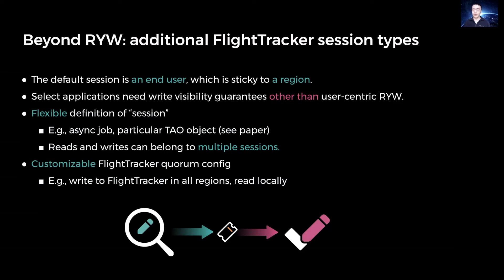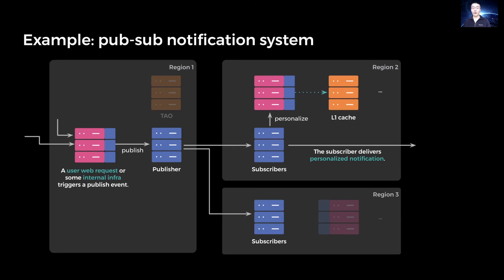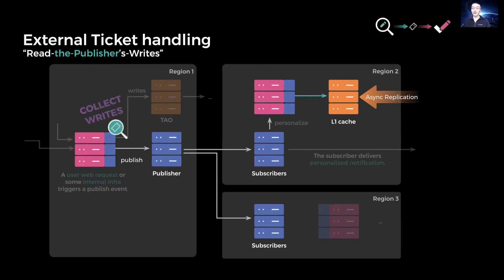For example, to cater toward a high read-write ratio, they could write to FlightTracker in all regions and read from FlightTracker in the local region. Systems at the product infrastructure layer may handle tickets explicitly, especially when we can piggyback on existing communication paths. For instance, Facebook has a PubSub notification system that allows a user web request or internal infrastructure to trigger a published event to subscribers in many different regions. Each subscriber reads from Tao in order to render personalized notifications. The problem is the published events race with Tao's replication, meaning the subscriber may not observe the publisher's earlier writes that the notification depends on. To solve this, we let the publisher collect its writes into a ticket and send this ticket along with the published event. All subscribers then use ticket-inclusive reads to render the notifications, thus explicitly guaranteeing reading the publisher's writes.